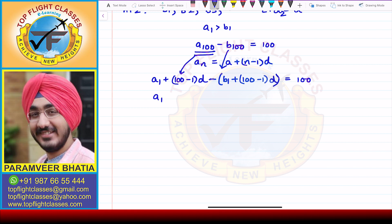So from here, what I will get is A1 plus (100 minus 1), that is 99D, minus B1, and (100 minus 1), that is 99, so minus 99D. And this will be equal to 100.